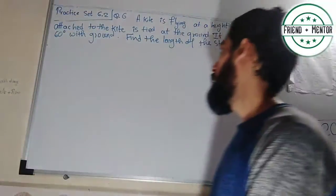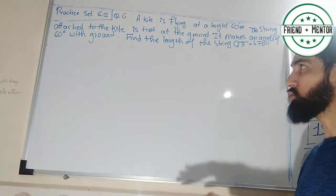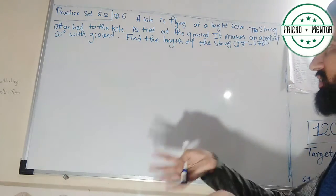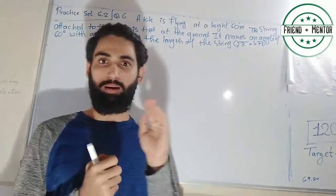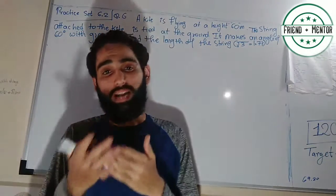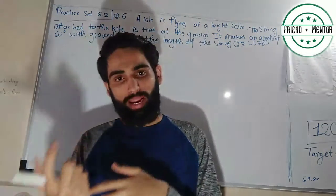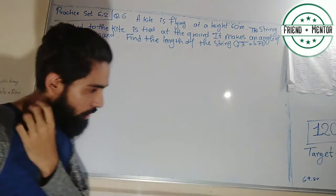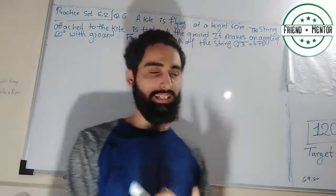Question number 6: A kite is flying at a height of 60 meters from the ground. The string attached to the kite is tied at the ground and makes an angle of 60 degrees with the ground. The assumption is that the thread is completely straight when the kite is flying.